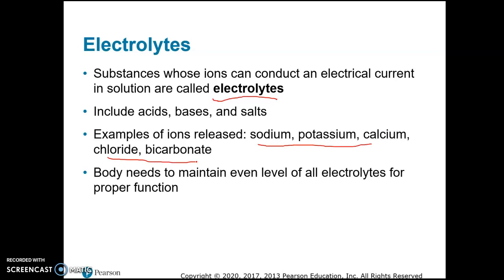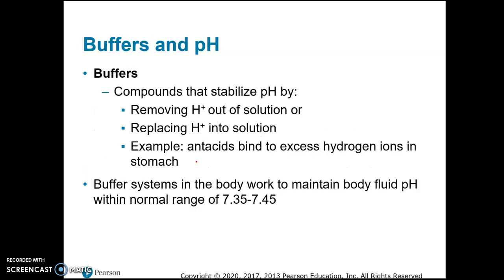Sodium, potassium, and calcium are essential for muscle contractions, nerve impulses, and the heartbeat. Chloride and bicarbonate are important ions as well — bicarbonate is a very important buffer that helps maintain the pH of body fluids. Electrolytes are substances that can release ions into solution, and when they do that, the solution can actually conduct electricity. That's important because electricity runs through our bodies — a nerve impulse is an electric current that travels through our nerves.